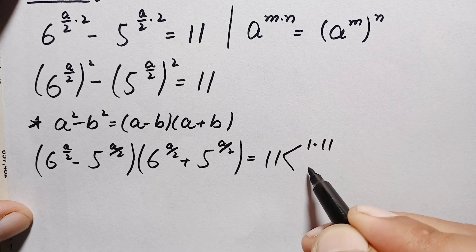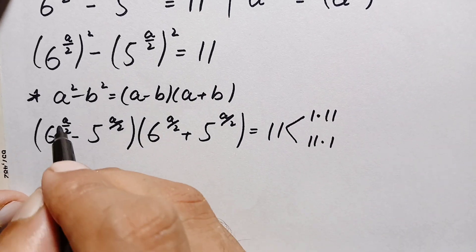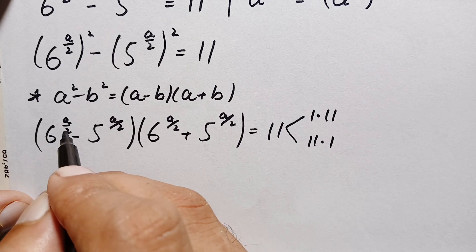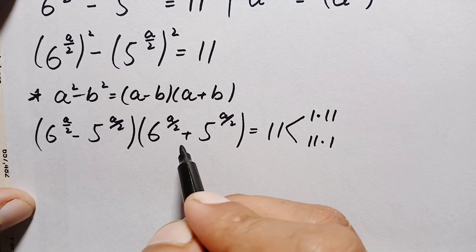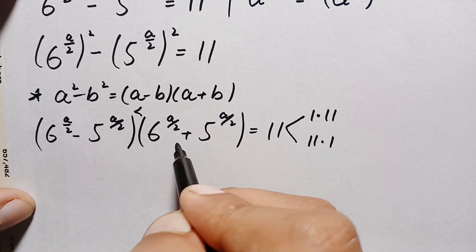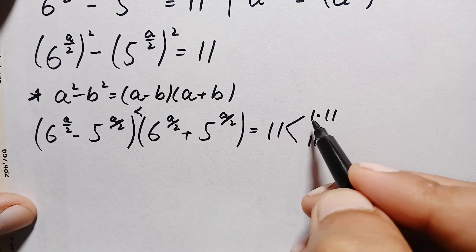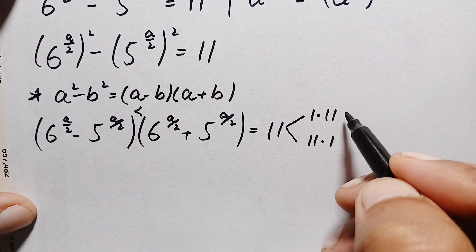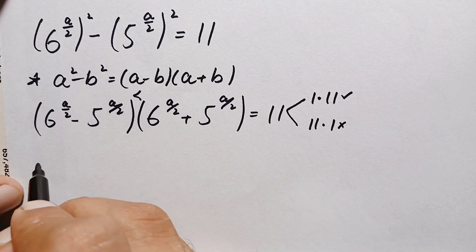Now we can write 11 as 1 times 11 or 11 times 1. Looking at the left hand side, for any positive rational number a, the value a/2 is positive. For any number in the power, the sum of these two terms will always be greater than their difference. Therefore the first factor (difference) is smaller than the second factor (sum). So this pair best matches with 1 times 11, and we reject 11 times 1.